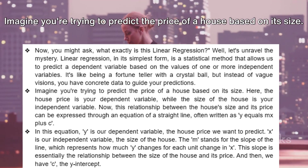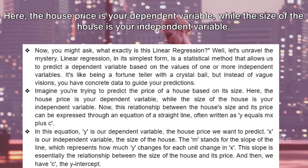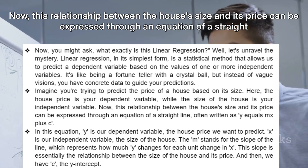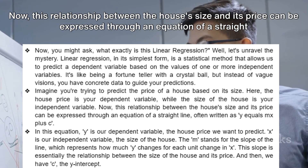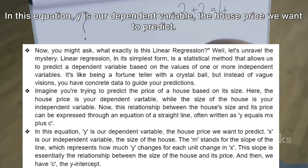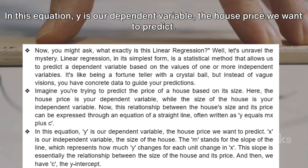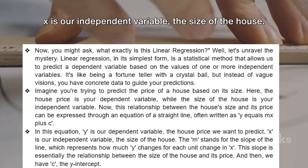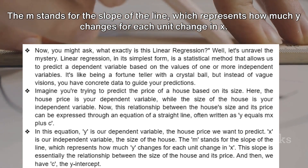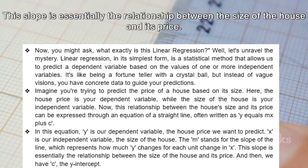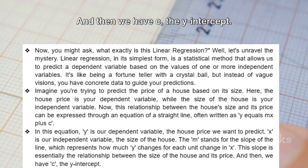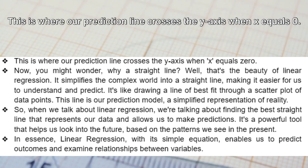Imagine you're trying to predict the price of a house based on its size. Here, the house price is your dependent variable, while the size of the house is your independent variable. This relationship can be expressed through an equation of a straight line, often written as y = mx + c. In this equation, y is the dependent variable (the house price), x is the independent variable (the size of the house), m is the slope representing how much y changes for each unit change in x, and c is the y-intercept, where the prediction line crosses the y-axis when x equals 0.